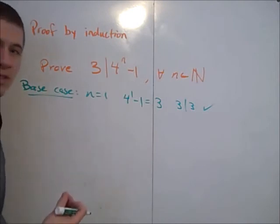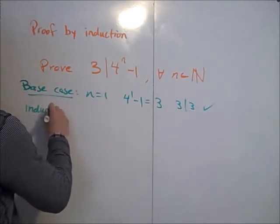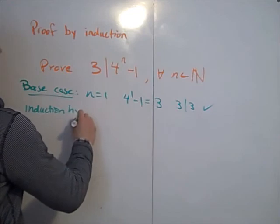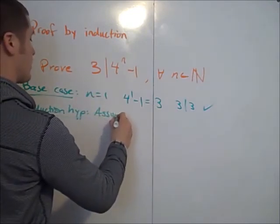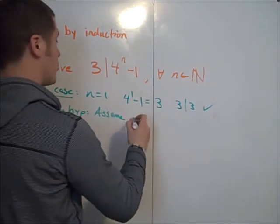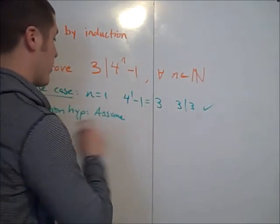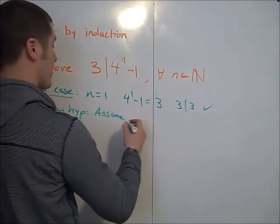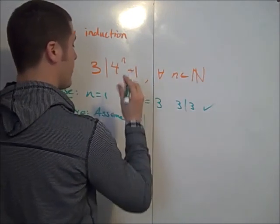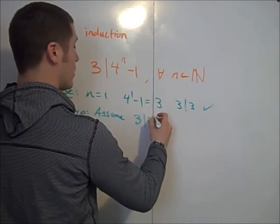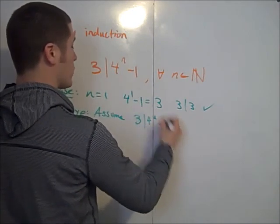The next step is called the induction hypothesis. The induction hypothesis is assume true for some kth case. So assume that 3 divides 4 to the k minus 1.